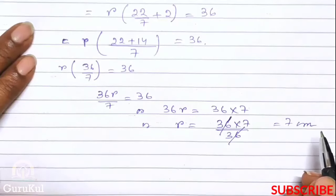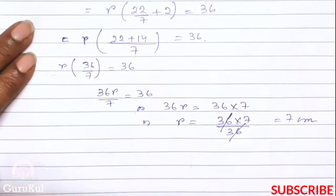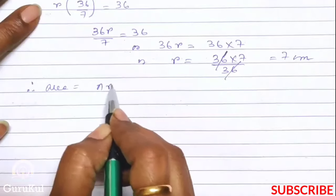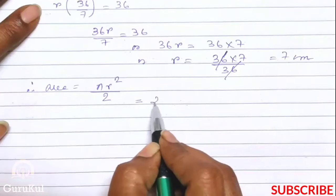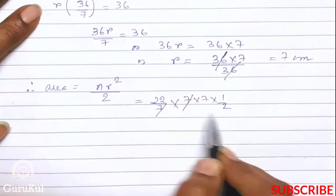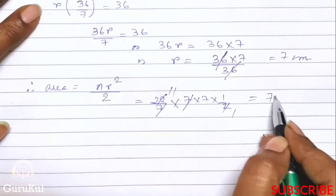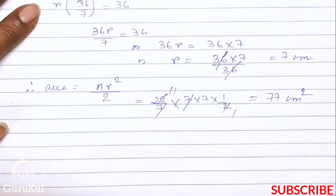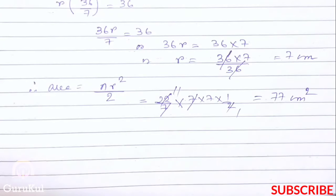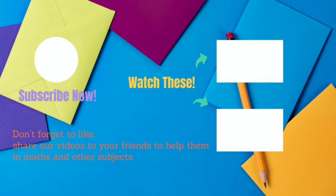So our radius is 7 cm. Therefore area of the semicircle is equal to pi r square by 2, that is 22 by 7 into 7 into 7 into half. 7 and 7 cancel, giving 77 cm² as the area of the new figure formed by bending the same wire. With that we come to the end of exercise 16.3. Thank you, I'll see you next time.